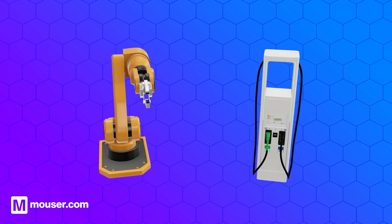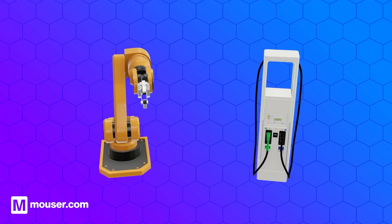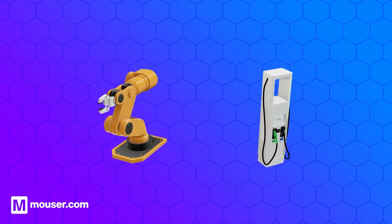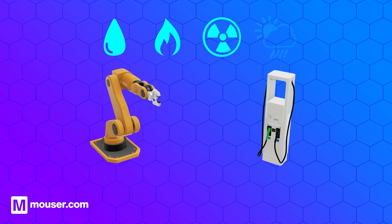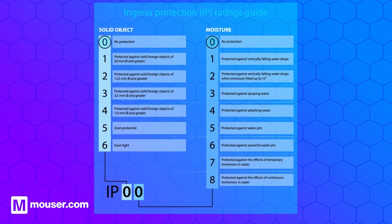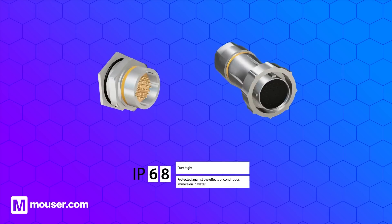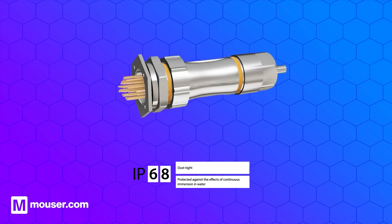For industrial or outdoor applications, connectors and their attached cables must be mechanically robust, but may also need protection against environmental factors — liquids, gases, and other contaminants found in industrial environments, or simply the weather if outdoors. This protection is described by ingress protection, or IP ratings, such as IP67 or IP68. Connectors that comply with these standards typically include seals and locking mechanisms and must pass rigorous tests to be considered compliant.